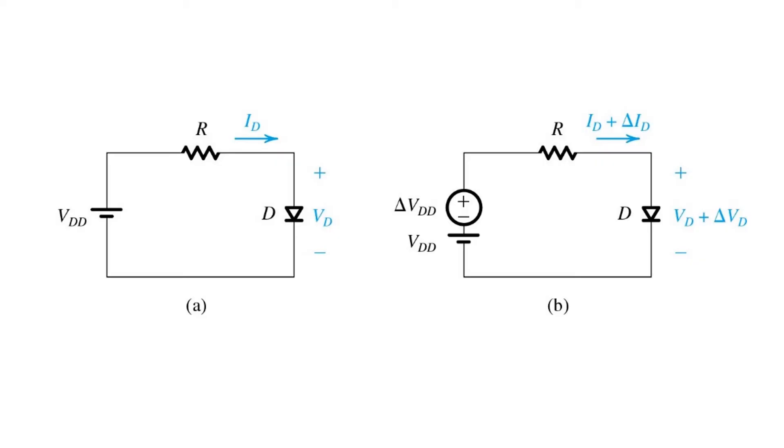Using this notation, we can think of the incremental quantities delta VDD, delta ID, and delta VD as the small signals. And the analysis to find these incremental quantities will be called small signal analysis.